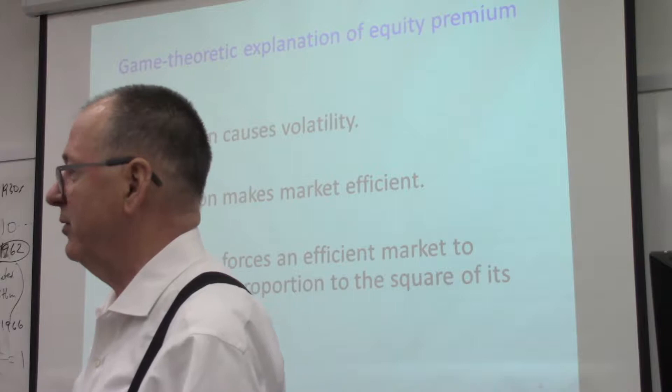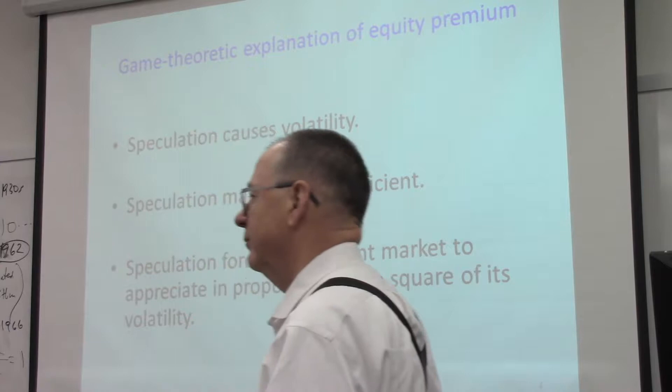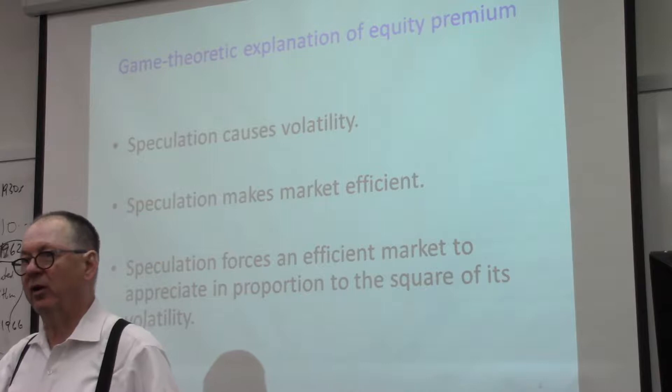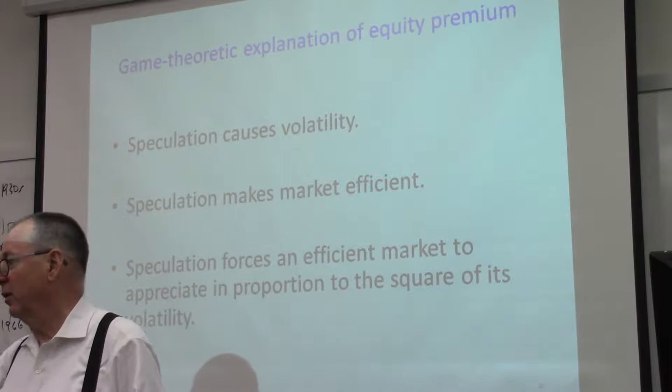What does an efficient market mean? It means the prices are the right prices. You're not going to make any money from them because the price is already right. Why is the price already right? Because everybody else is out there trying every strategy they can to make money. Speculation means that different people have different views on value. Most of the trading that goes on in the stock market is being done by speculators whose values don't have anything to do with it except they want to make money — because they don't hold the stock long enough. They're not investors.